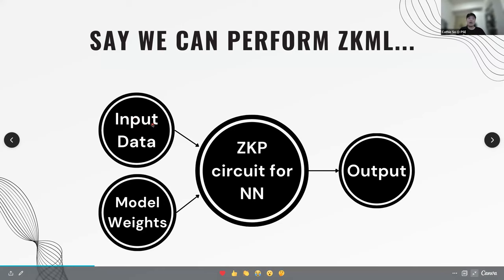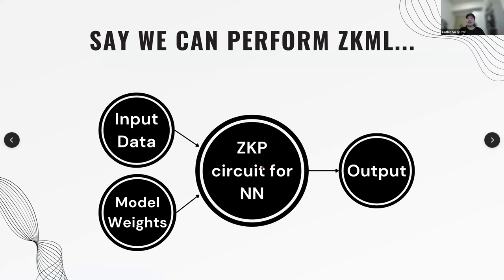The model also takes in some model weights — in the Web2 world, these are weights people have trained their model for. Nowadays, it's not enough to just have the model architecture; the model weights are usually much more precious. When you put in the input data and model weights, you get some output. For facial recognition, it could be an encoding of your face; for classification, it could be a one or zero, some kind of prediction. And say we can already perform ZKML — we already have some method to put a model into a ZK circuit.